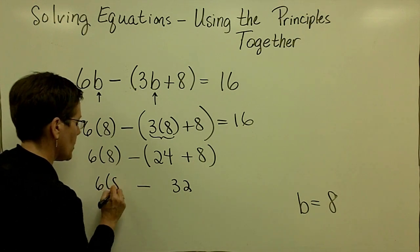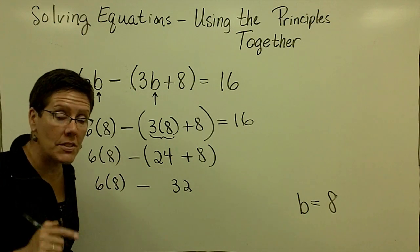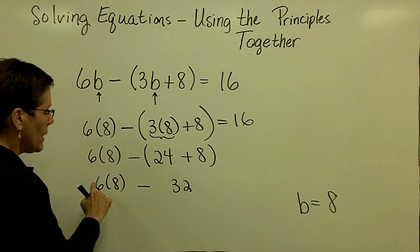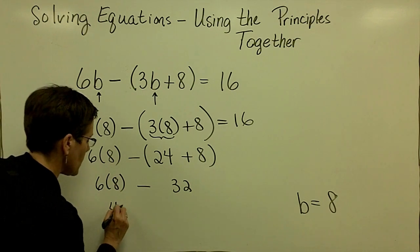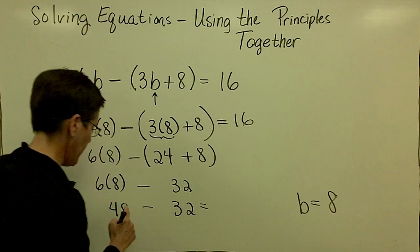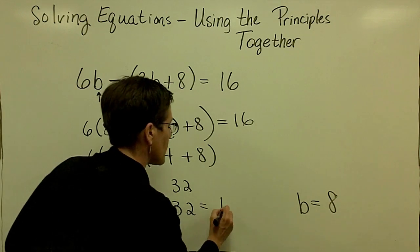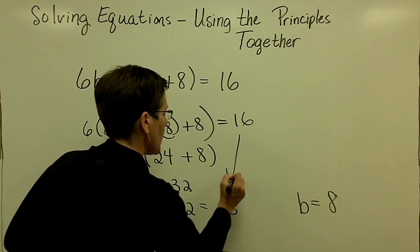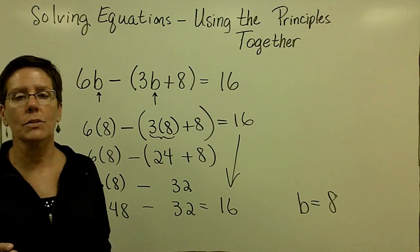I'm not even going to do this 6 times 8 yet, because I wanted you to see me finish what's in the parentheses. Now I will multiply. 6 times 8 is 48 minus 32. 48 minus 32 appears to be 16. And lo and behold, that is what I wanted it to be equal to.